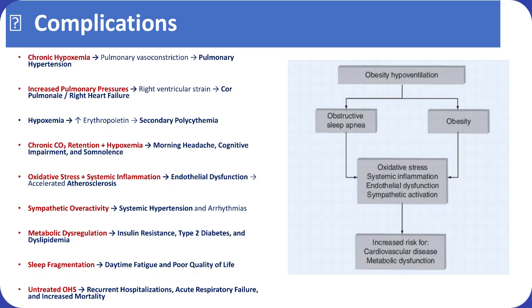Oxidative stress and systemic inflammation promote endothelial dysfunction and accelerate atherosclerosis, and sympathetic overactivity results in systemic hypertension and arrhythmias. Metabolic dysregulation causes insulin resistance, type 2 diabetes, and dyslipidemia, while sleep fragmentation worsens fatigue and quality of life. If untreated, OHS increases the risk of recurrent hospitalizations, acute respiratory failure, and mortality.